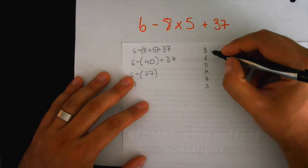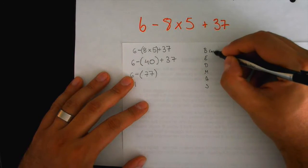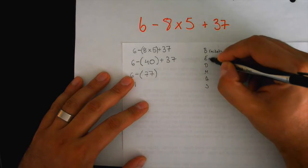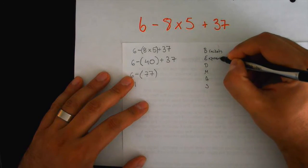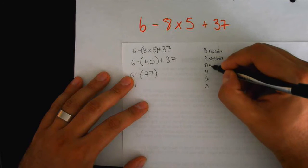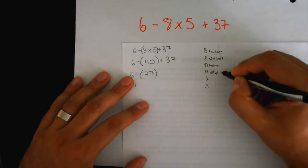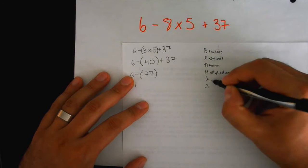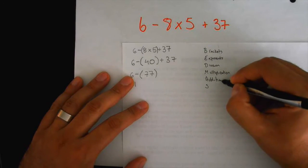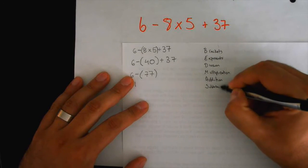Okay, and the B stands for brackets, exponents which we don't have in this situation, division, multiplication, addition, subtraction.